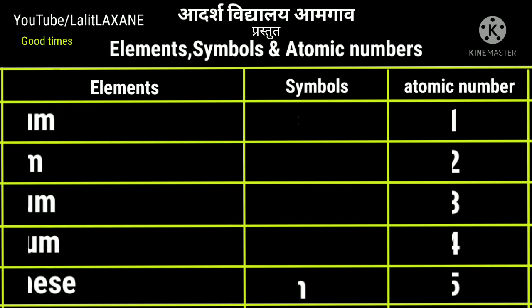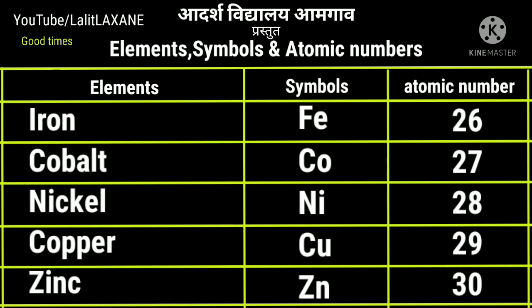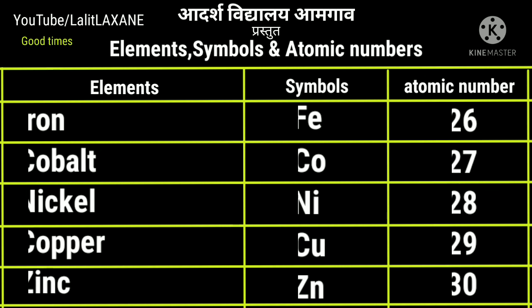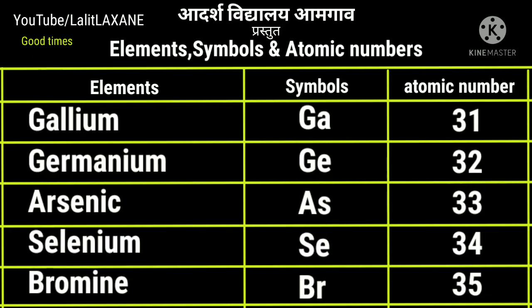With atomic number 26, iron Fe, that is ferrum. Cobalt Co, 27. Nickel Ni, 28. Copper with symbol Cu — that is cuprum — and atomic number 29. Zinc with symbol Zn and atomic number 30.